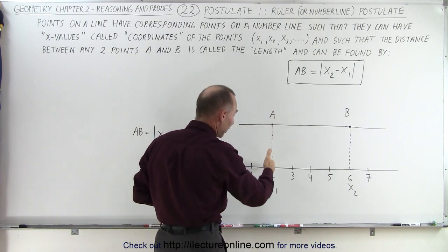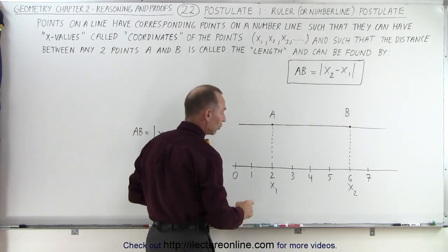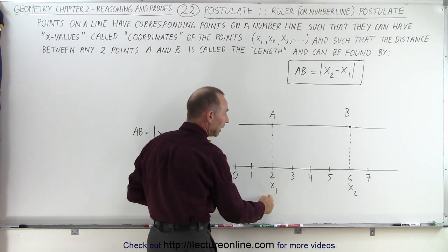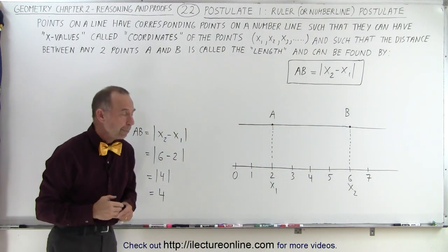We can say that those two points have corresponding values on the number line. In this case, A has a value of 2 on the number line and B has a value of 6 on the number line. These are the coordinates of A and B, and we can also call them in general x1 and x2 as the two coordinates for A and B.